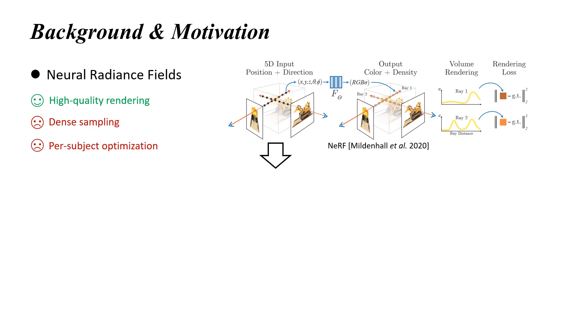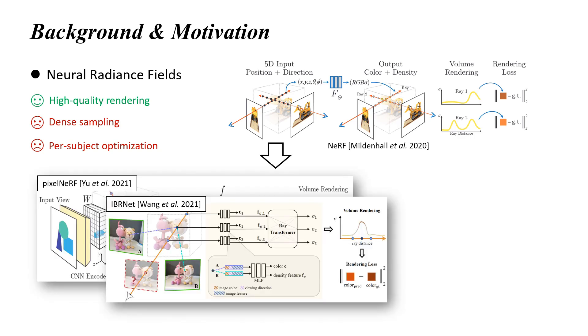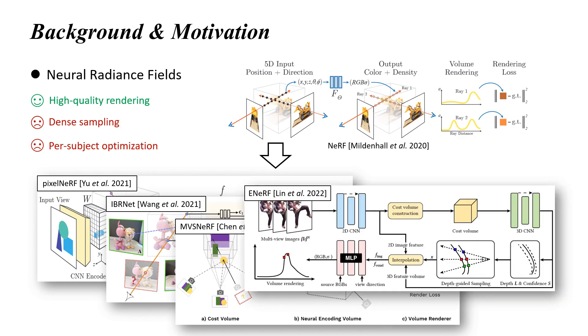Previous attempts, for example PixelNerf, IBRNet, MVS-NERF, and e-NERF, resort to image-based features as potent prior cues for feed-forward scene modeling. Despite the great progress, efficient generalizable Nerf for interactive scenarios remain to be further elucidated.